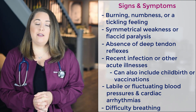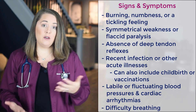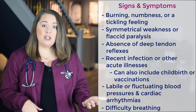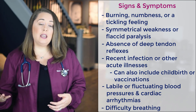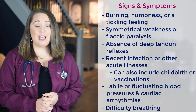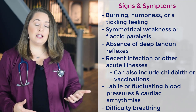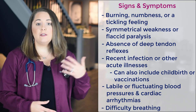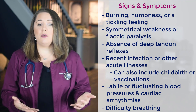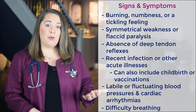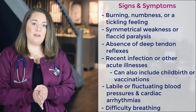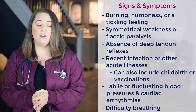You'll also see the absence of deep tendon reflexes because reflexes are a sensory-motor response that happens at the spinal level and not within the brain. Guillain-Barré patients will have had a recent infection or other acute illness, which can also include childbirth or vaccinations. You will also see labile or fluctuating blood pressures and cardiac arrhythmias due to the autonomic nervous system response, which controls blood pressure, heart rate, breathing, temperature, digestion, metabolism, and electrolyte balance. As paralysis progresses, this nerve pathway becomes damaged. The last symptom is difficulty breathing as the paralysis moves to the level of the diaphragm.